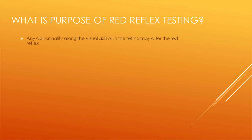Loss of transparency in any of these structures can alter the red reflex, including from front to back: the tear film, cornea, aqueous humor, lens, vitreous gel, and retina.